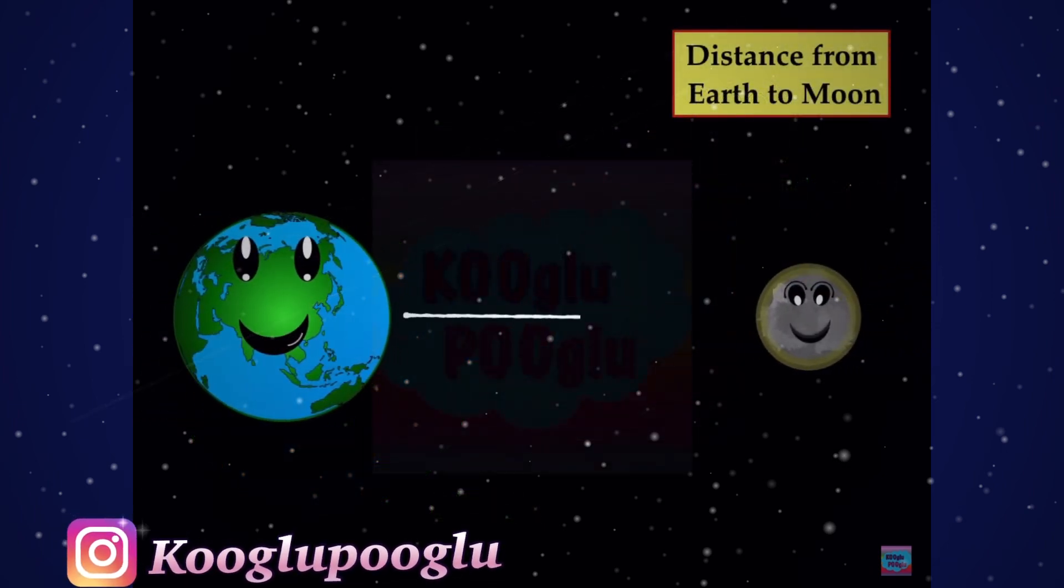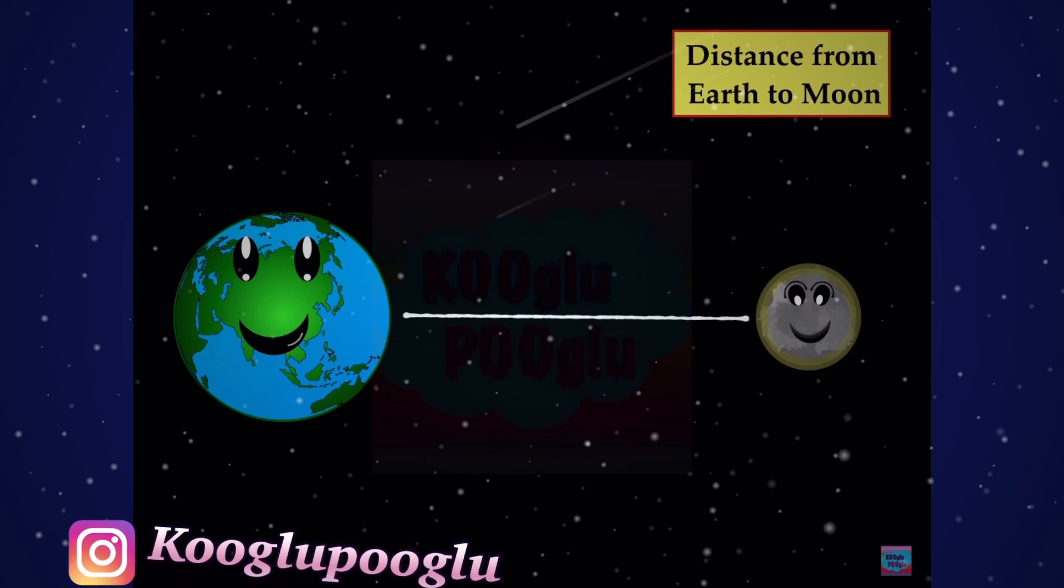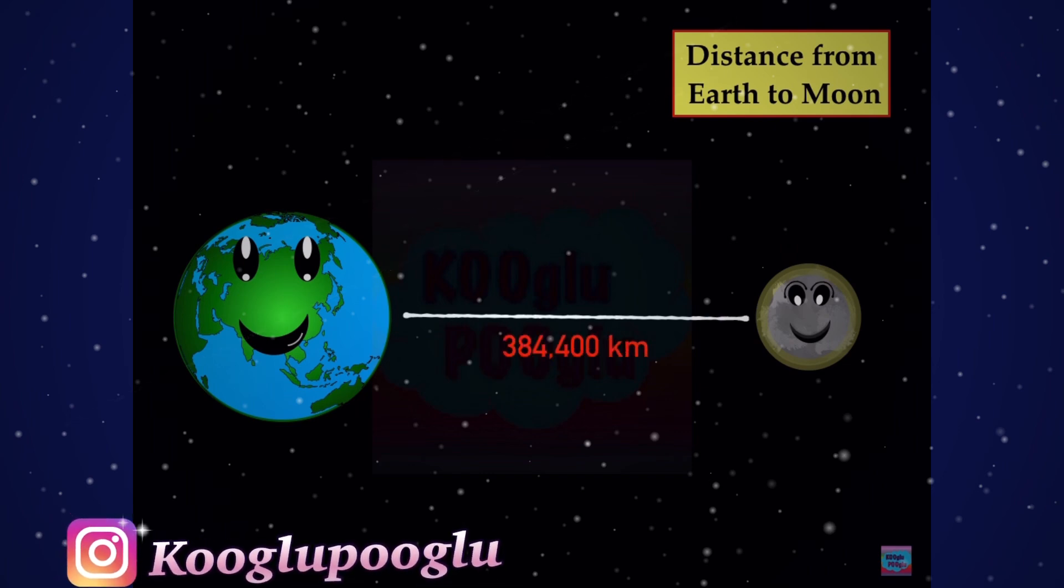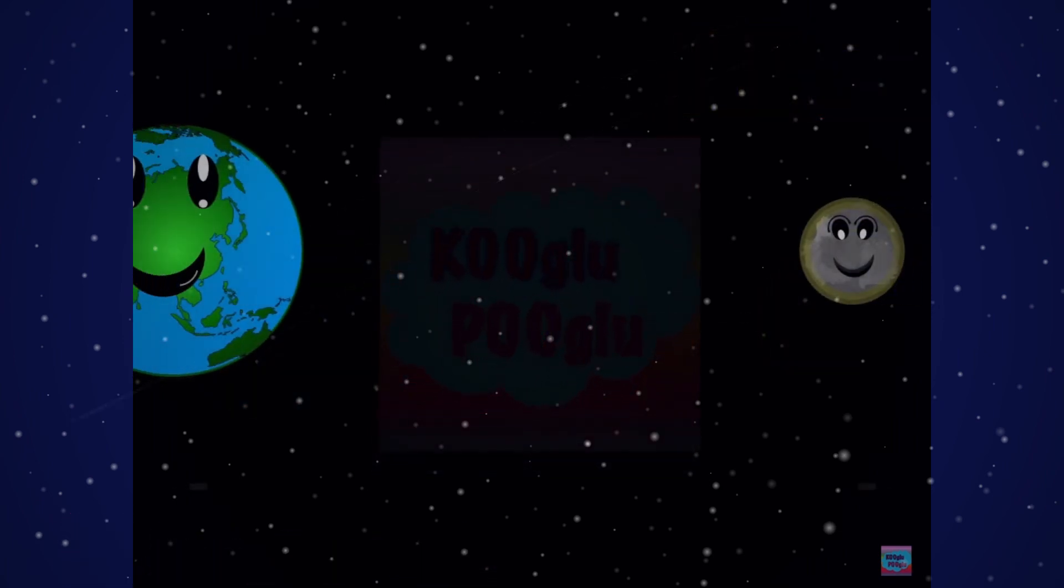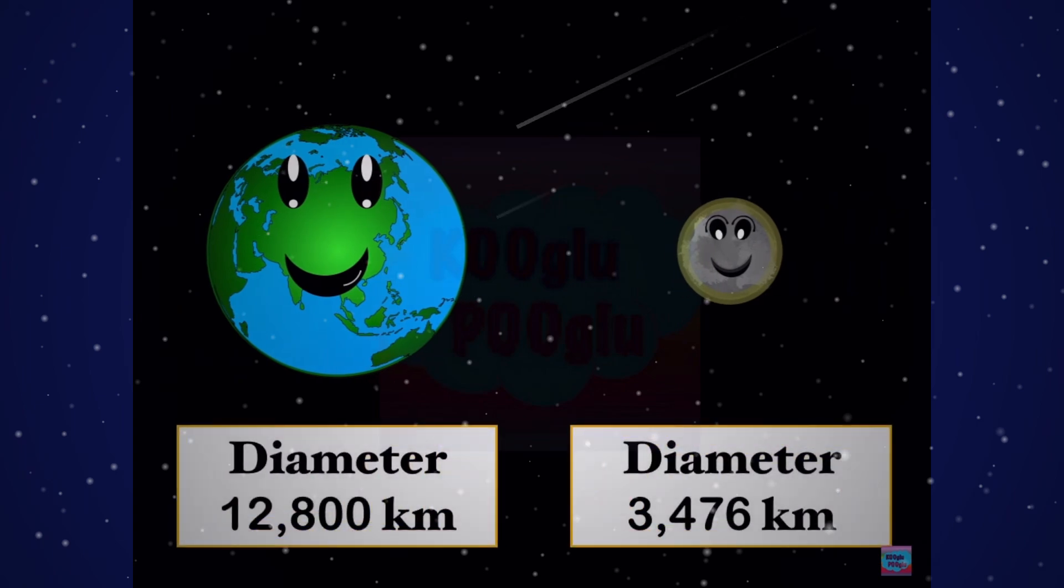The distance from Earth to the Moon is 384,400 kilometers. Now let's check the diameter of Earth and Moon. The diameter of Earth is 12,800 kilometers, while the diameter of the Moon is 3,476 kilometers.